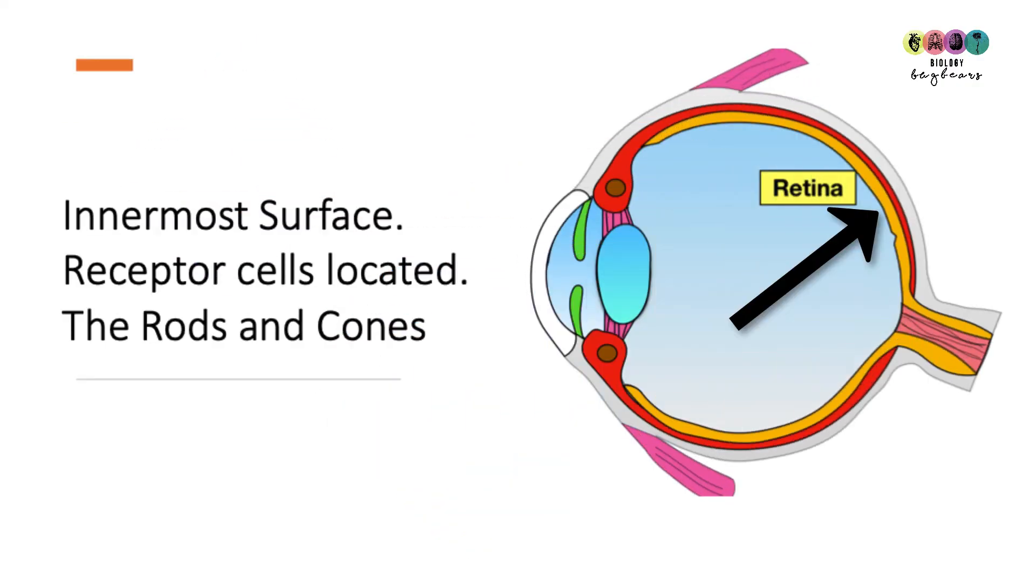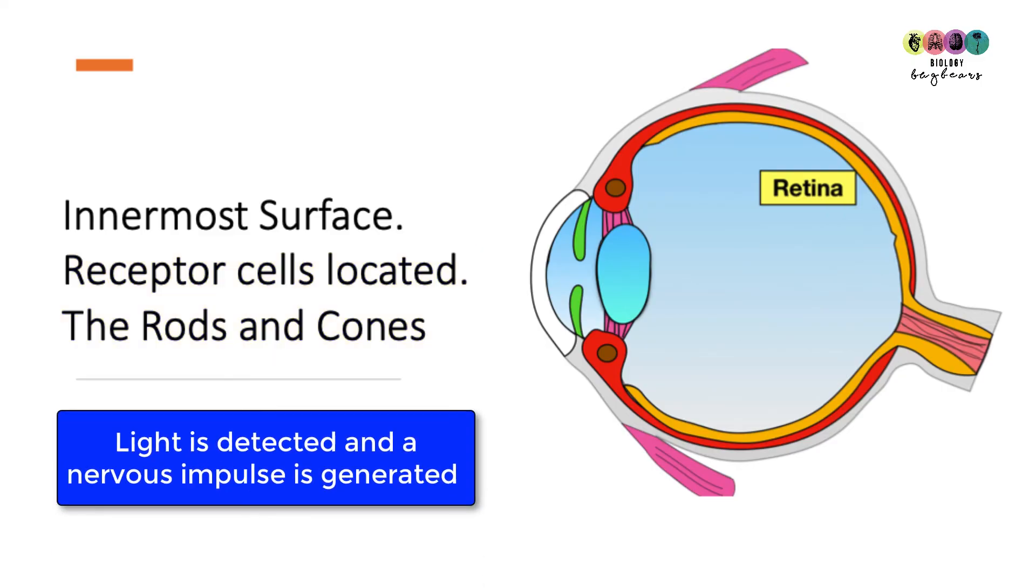The innermost surface of the eye is called the retina. It's here that those specialised receptor cells are located, the rods and the cones. These detect light. So it's in the retina that light is detected by those specialised receptor cells and that stimulus is converted into a nervous impulse which is passed to the brain for interpretation.